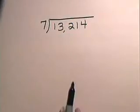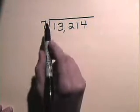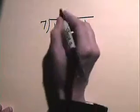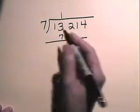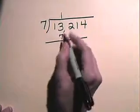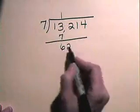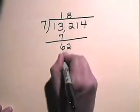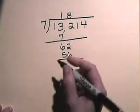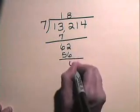We will now divide whole numbers. We will divide 13,214 by 7. 7 divides into 13 one time. 1 times 7 is 7, and we subtract. 13 subtract 7 is 6, and we bring down our next number. 7 divides into 62 eight times. 8 times 7 is 56, and we subtract. 62 subtract 56 is 6.